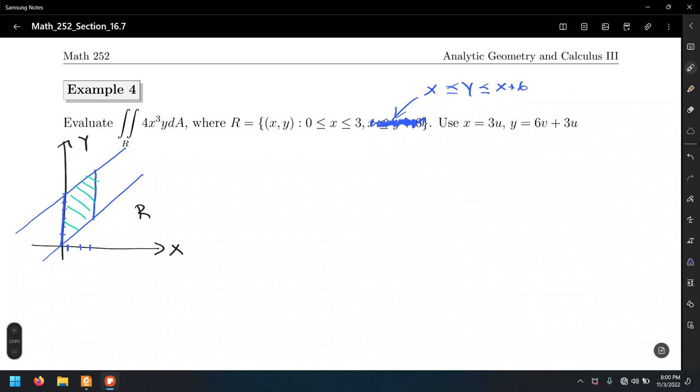This time we're going to figure out the limit in a more straightforward way. Notice the substitutions they are proposing us to use: X equals 3u and Y equals 6v plus 3u. We're going to take advantage that one of the proposed substitutions contains only one single variable.